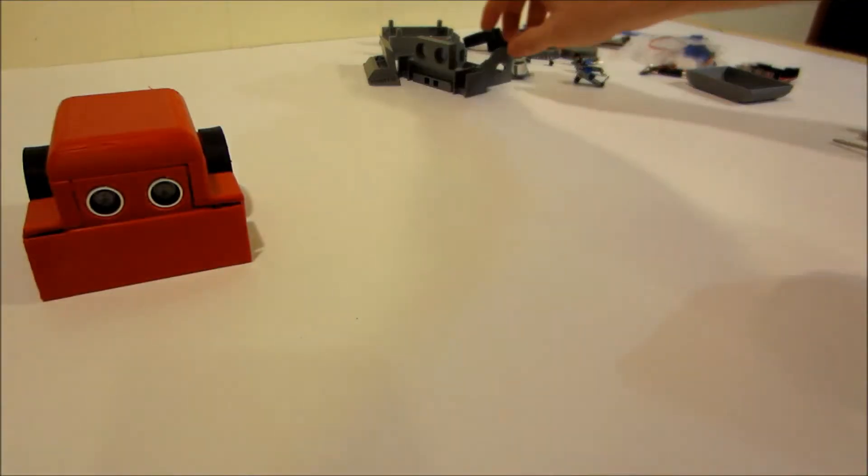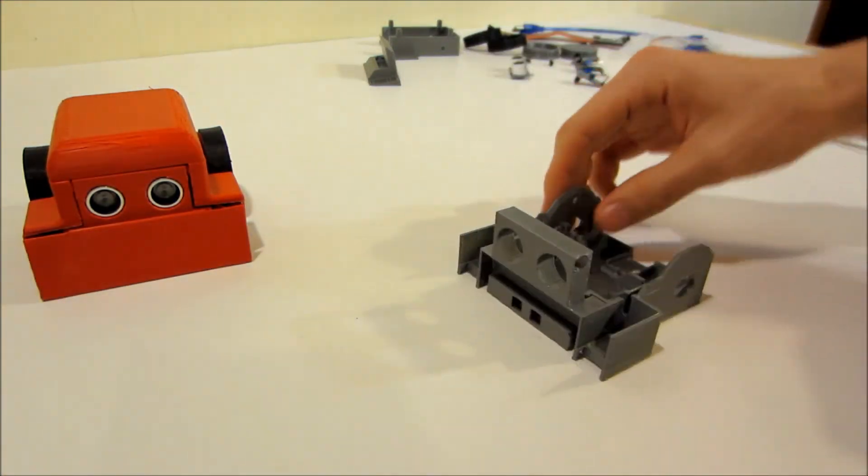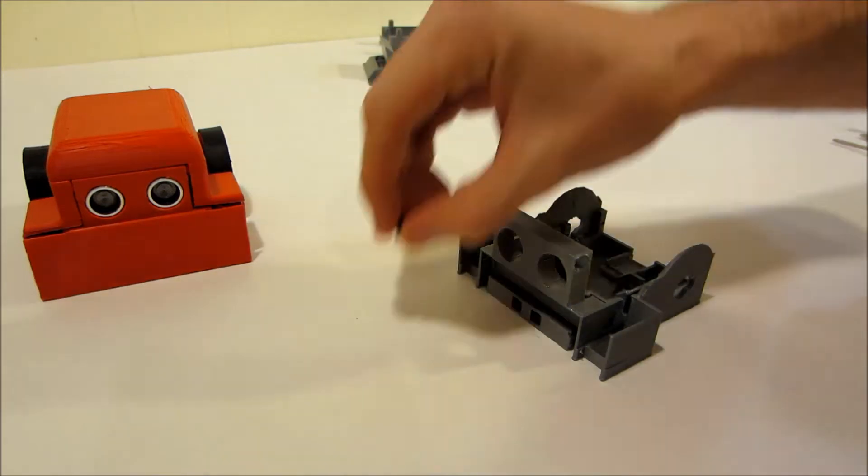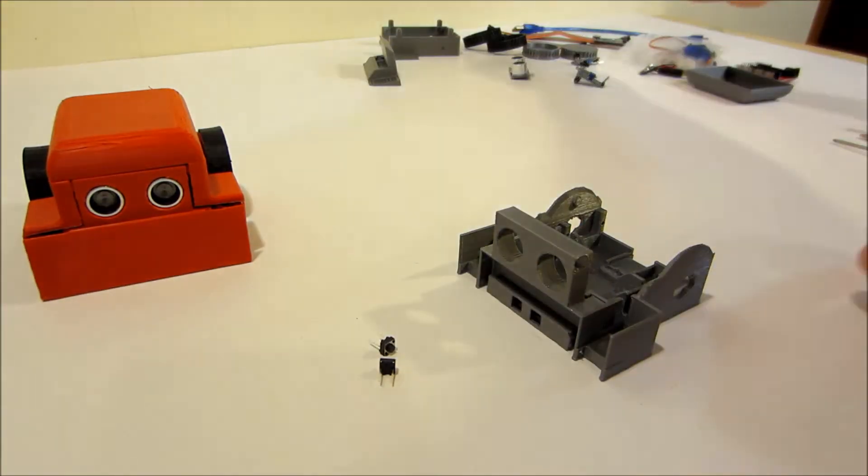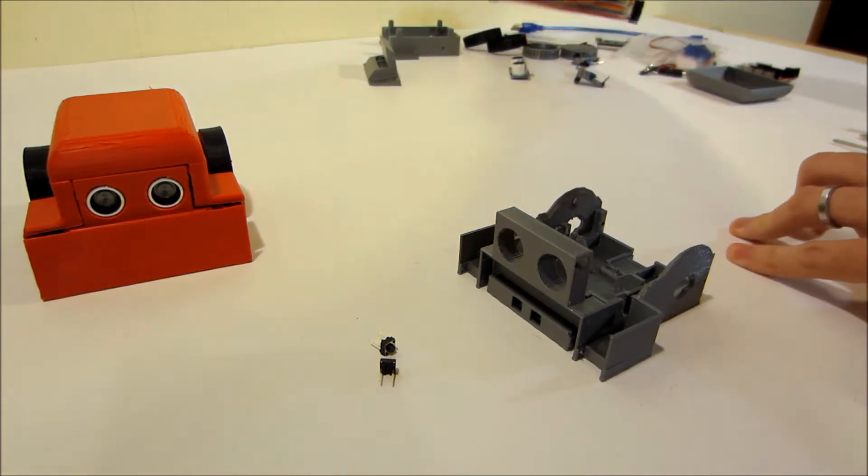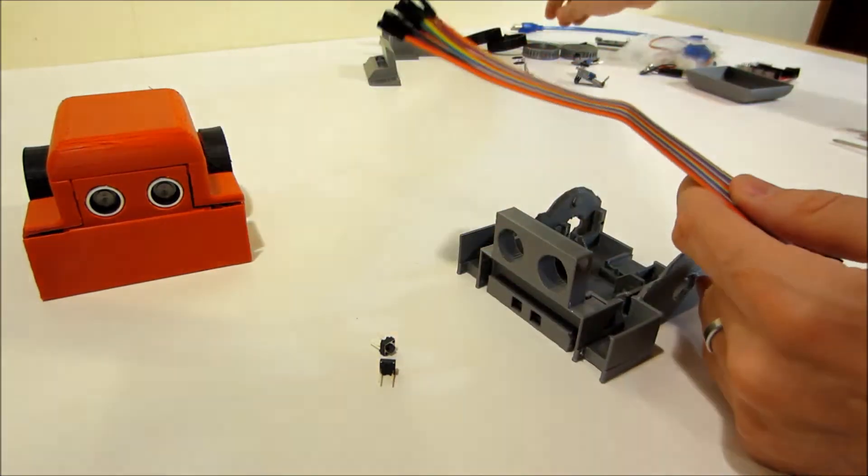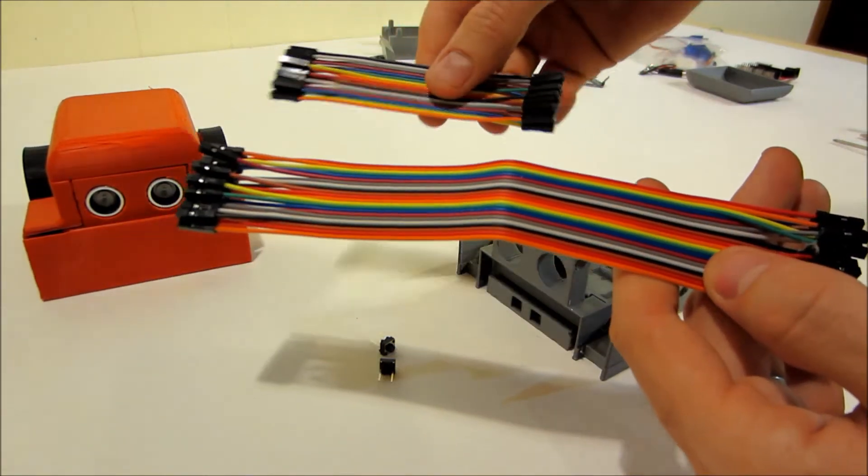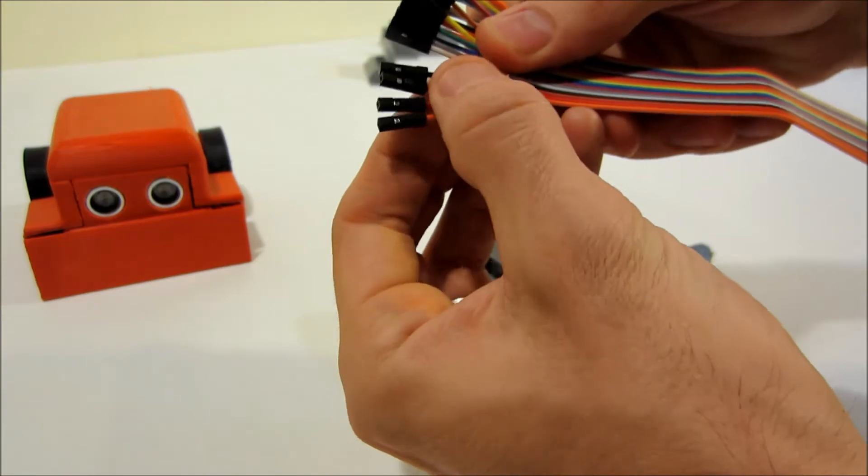First thing we're going to do is grab the chassis part and a couple of push-button switches and four of the longer of the two of the wires. Let's just pull those off of there.